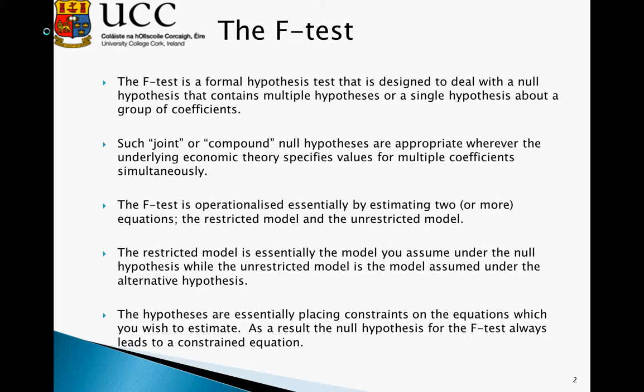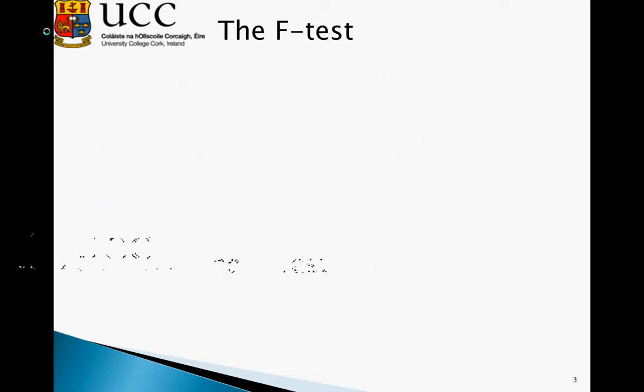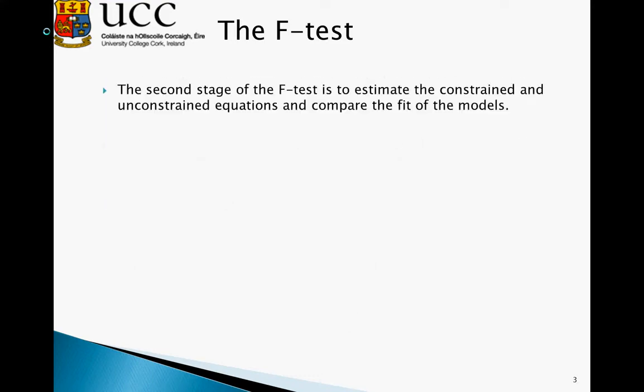As a result, the null hypothesis for the F test always leads to a constrained equation. We will always have some restriction imposed in the null hypothesis, and this will result in a constrained or restricted equation.